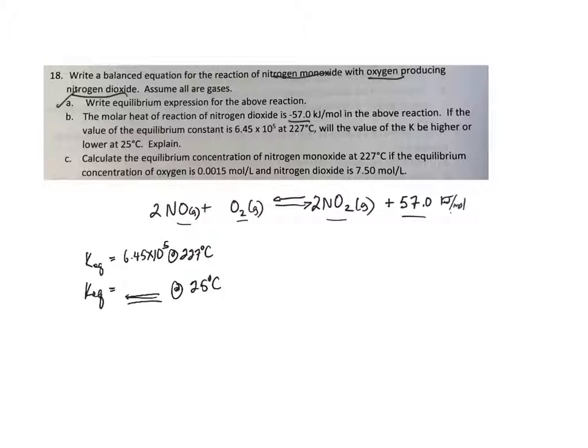So they want to know what the equilibrium value will be if the temperature is lowered to 25 degrees Celsius. In other words, they're decreasing the temperature. And typically, for an exothermic reaction, if they are decreasing the temperature,